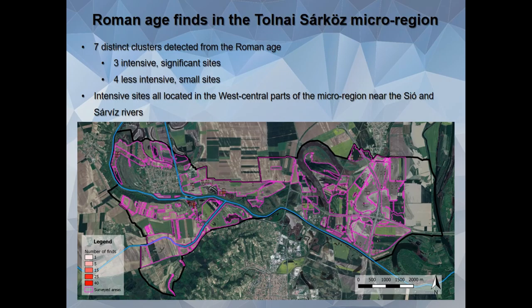In total, we have identified seven distinct clusters of Roman habitation in the area. Three of them are quite intensive, and four other sites were of much lower intensity, but they are still present. It is obvious from the data that the intensive sites are all located in the west-central parts of the microregion, near the confluence of the Shio and the Sharviz rivers. In the eastern part, we can only see some very low intensity sites or nothing at all.